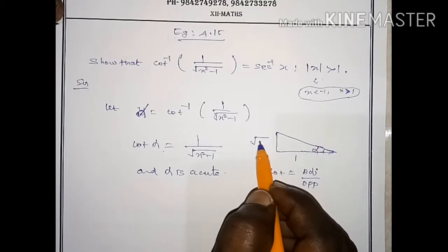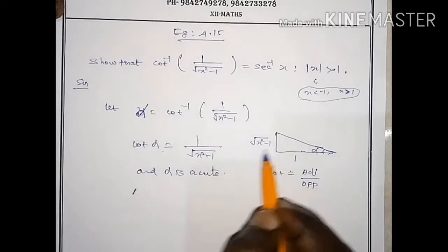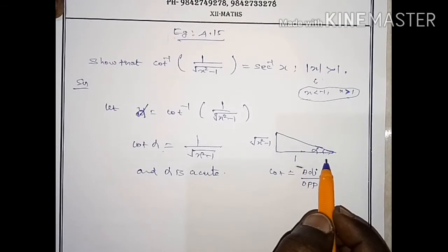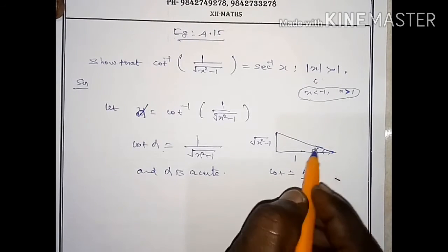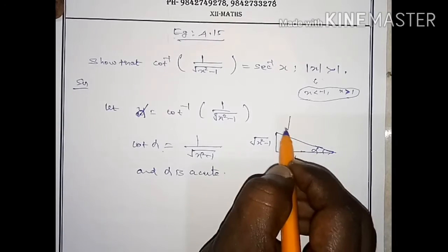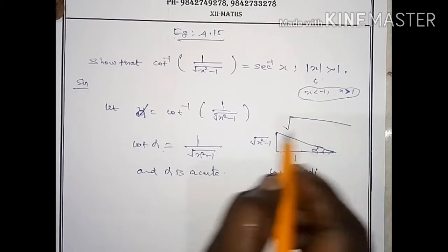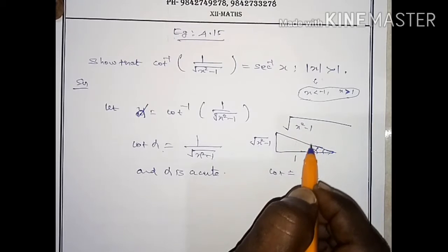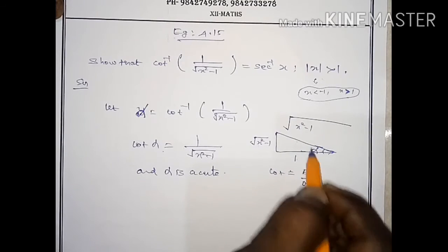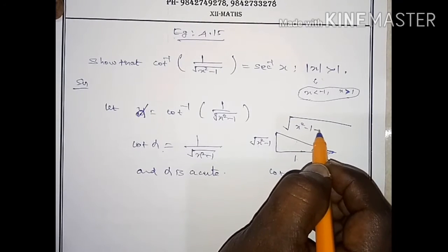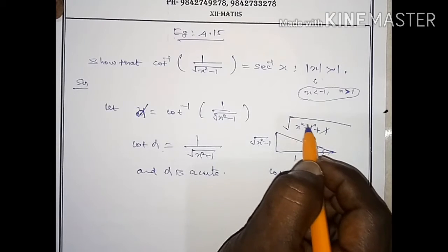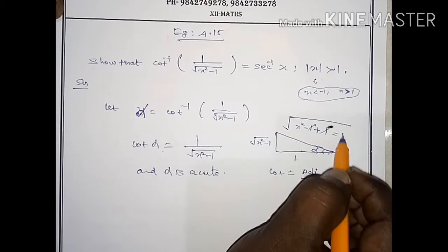The opposite side is root of x squared minus 1, that is square root of x squared minus 1. And the hypotenuse works out to root of x squared, which equals x.